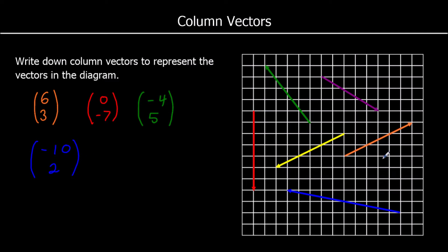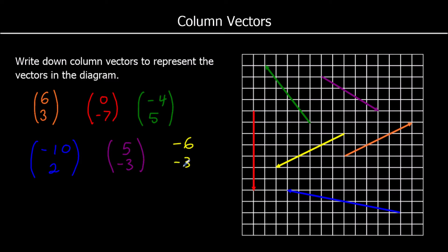The purple vector goes to the right 5, down 3. So it's positive 5, negative 3. And the yellow one goes to the left 6, so negative 6, and down 3, negative 3.